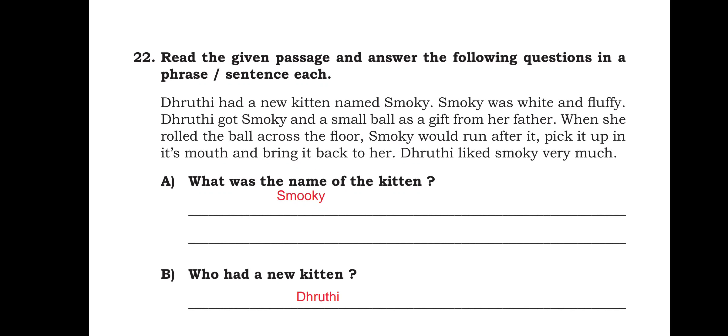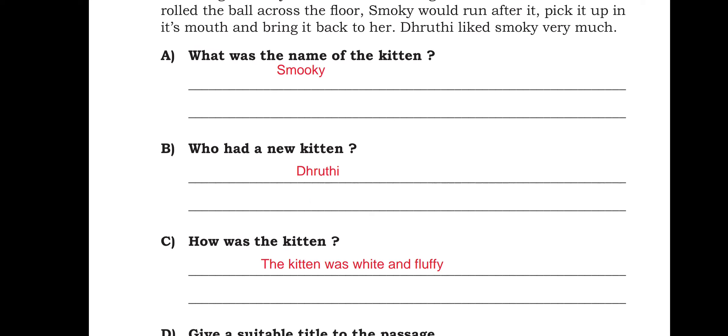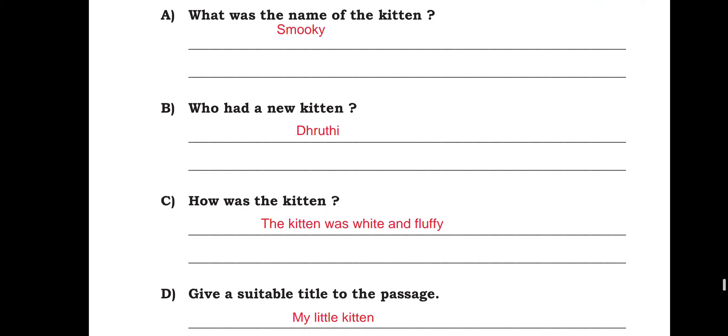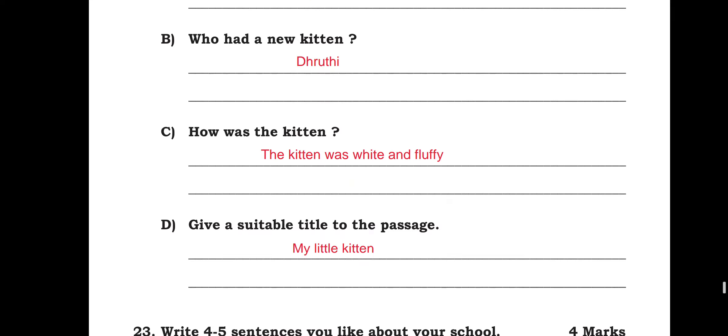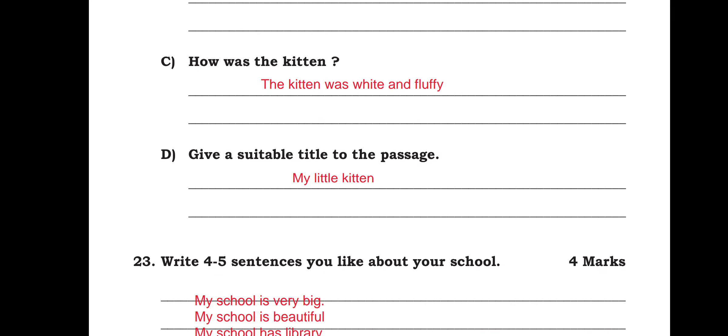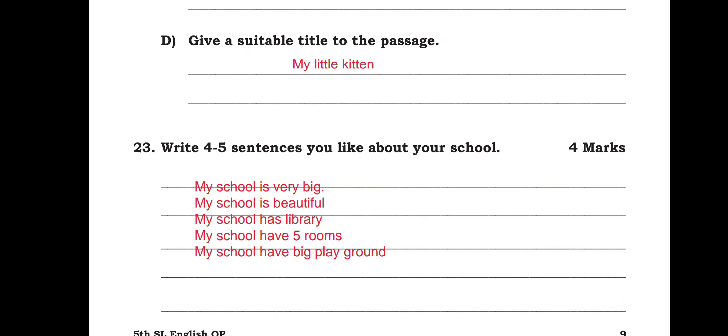Read the given passage and answer the following question in a phrase or sentence each. Druthi had a new kitten named Smokey. Smokey was white and fluffy. Druthi caught Smokey and a small ball as a gift from her father. When she rolled the ball across the floor, Smokey would run after it, pick it up in its mouth and bring it back to her. Druthi liked Smokey very much. What was the name of the kitten? The name of the kitten was Smokey. Who had new kitten? Druthi had new kitten. How was the kitten? The kitten was white and fluffy. Give a suitable title to the passage. The little kitten.